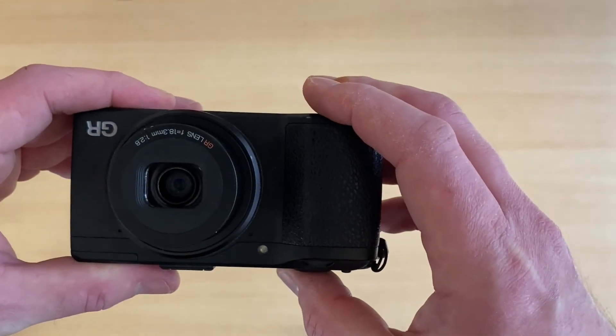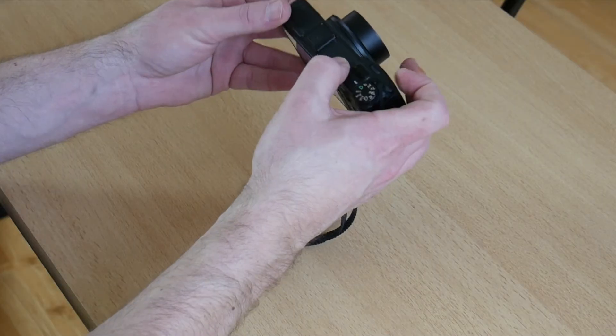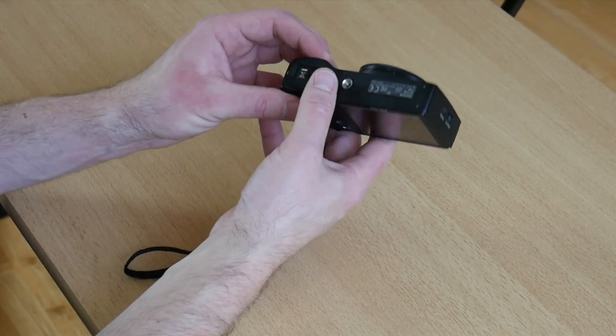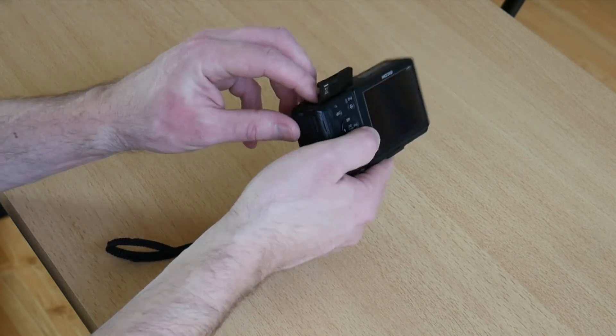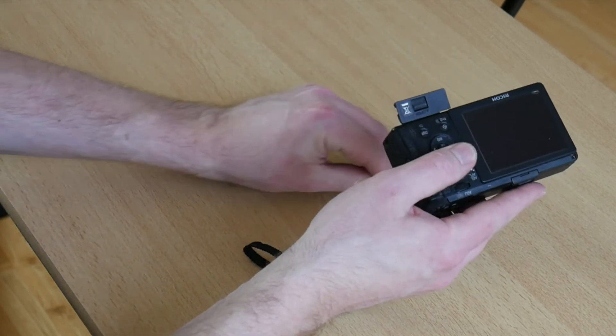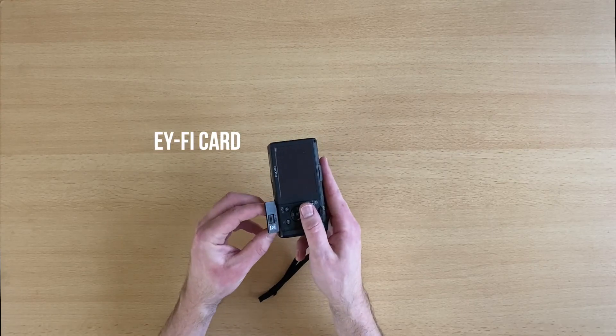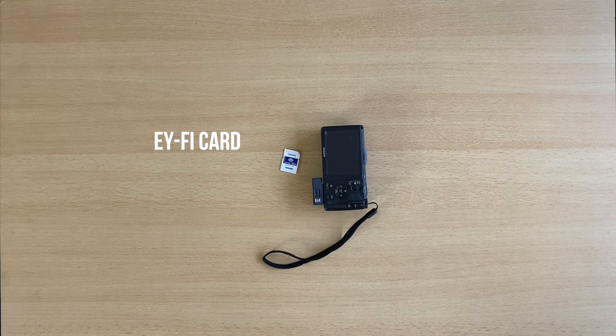This camera doesn't come with Wi-Fi - this is a pretty old camera. There's a new model out now, the Ricoh GR3, which has Wi-Fi and touchscreen and all sorts of cool stuff. Apparently it's a beast of a camera. One day maybe I'll upgrade, but for me this one works just fine. I pair it with an iFi card so I can transfer to my phone and upload to Instagram.